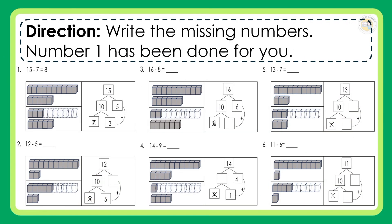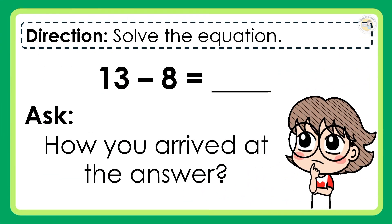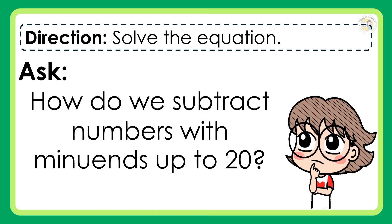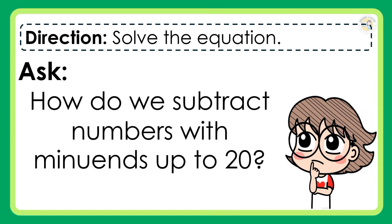Direction: write the missing numbers — number 1 has been done for you. Direction: solve the equation 13 minus 8 is equal to? How did you arrive at the answer? How do we subtract numbers with minuends up to 20?